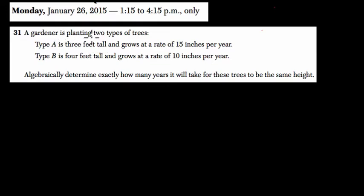Here, we're told a gardener is planting two types of trees. Type A is three feet tall and grows at a rate of 15 inches per year. So notice we've got feet and inches right away. We've got to choose to write everything in inches or feet. I'm going to choose inches. Converting 15 inches to feet is more tedious than converting three feet to inches.